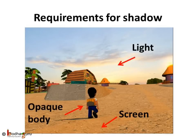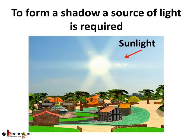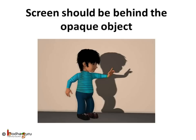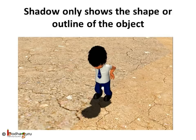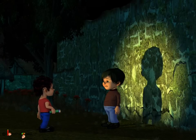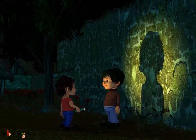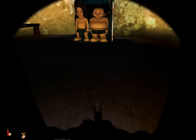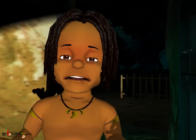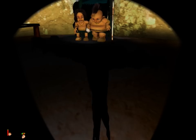To summarize: now you all very well know how shadows are formed. A source of light is required. An opaque object is required. And a screen or surface behind the object is required. Shadows are always black, regardless of the color of the object used to make the shadow. Shadows only show the shape or the outline of the object, not its details. The size of the shadow varies depending on the distance between the object and the source of light, and the distance between the object and the screen. So the next time you are in the dark and suddenly see some shadow, don't get scared, for it just means that there is a source of light nearby.